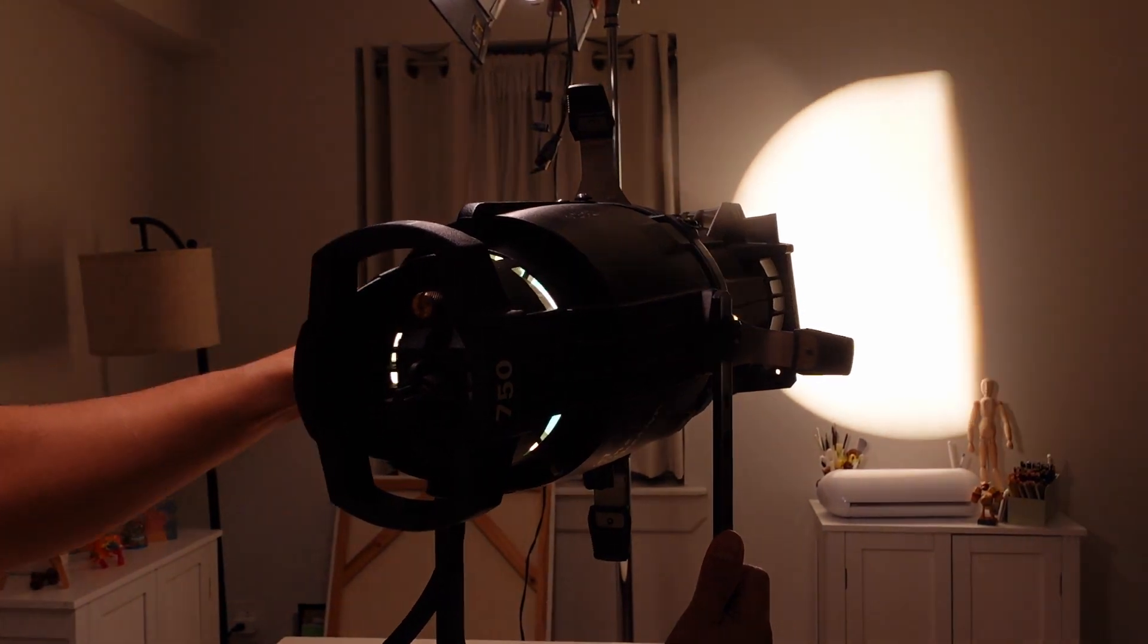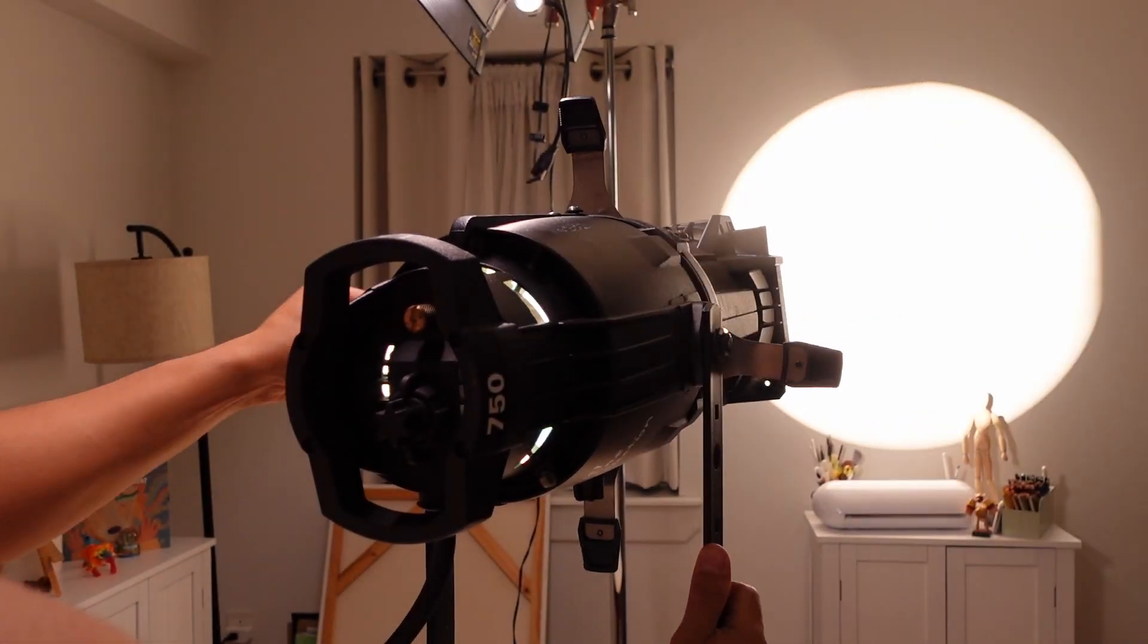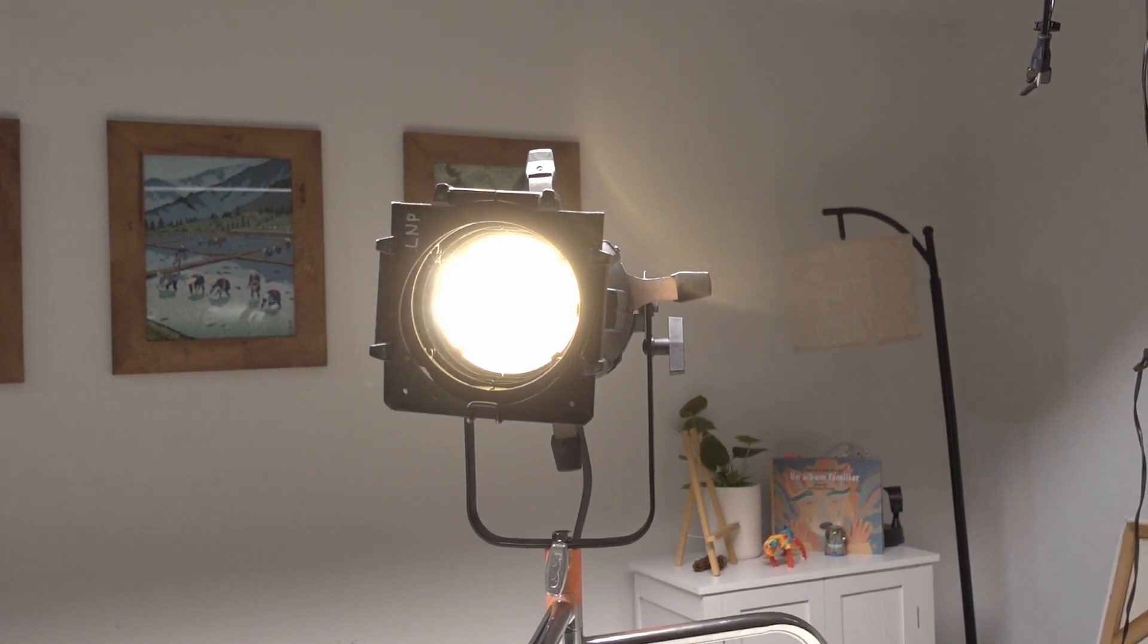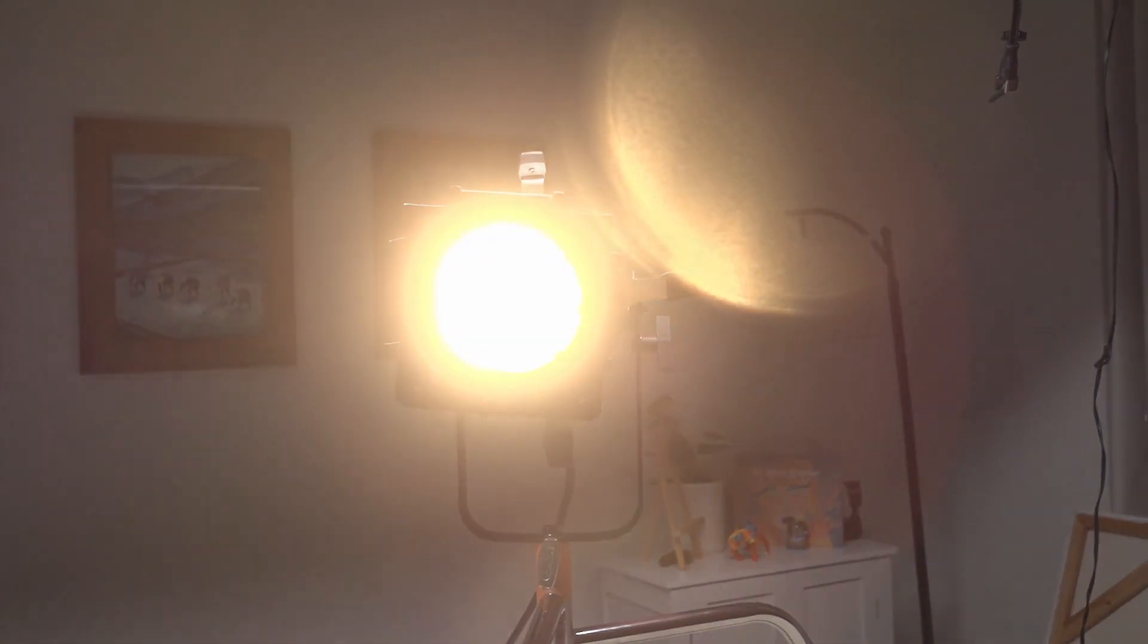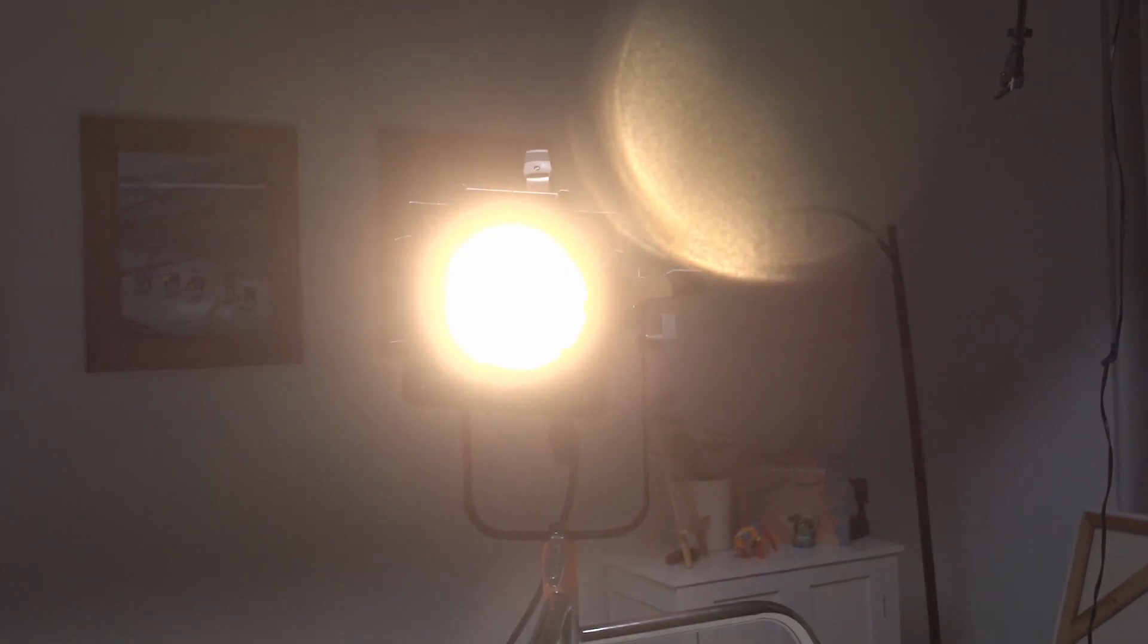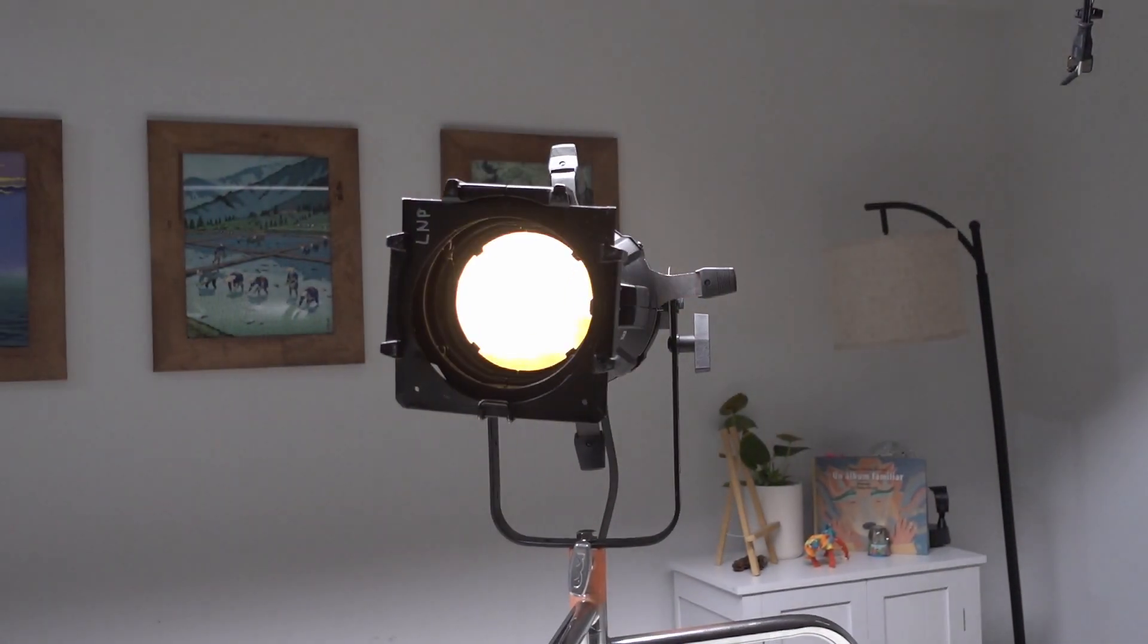In this video I'm going to be showing you the Source Four Leko and also how to make a Joe Leko at the end of the video. The Source Four Leko with the tungsten alone is used in theater, TV, stage, and film, and it's known for its control of light, very long throw, and the patterns you can produce with the light.